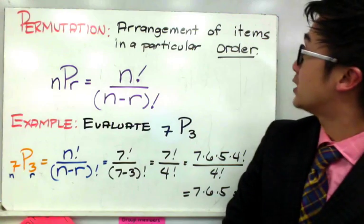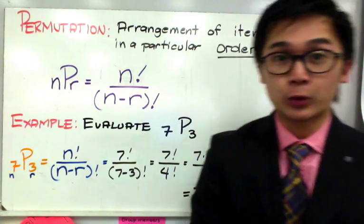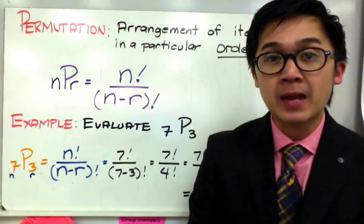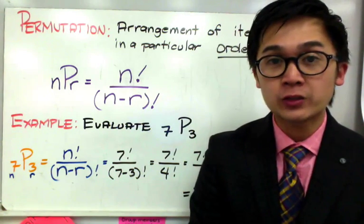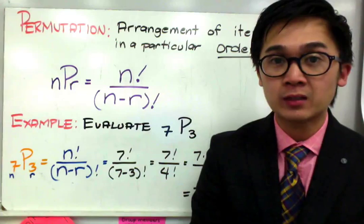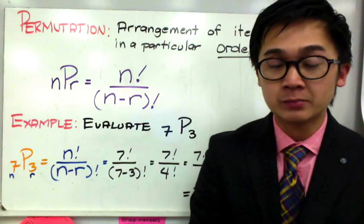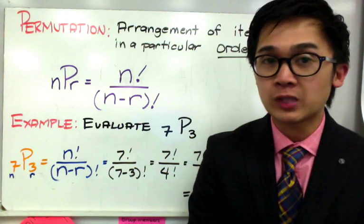Permutation is basically arranging items in a particular order. So for today, we're going to learn a mathematical skill on how to figure out the number of ways we can arrange a certain group of items. And by doing that, we will use a formula.